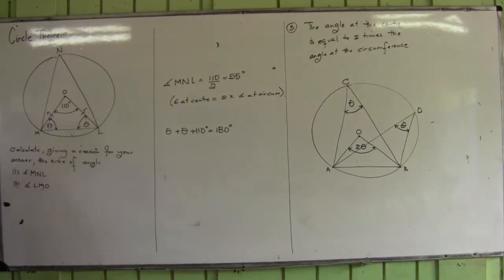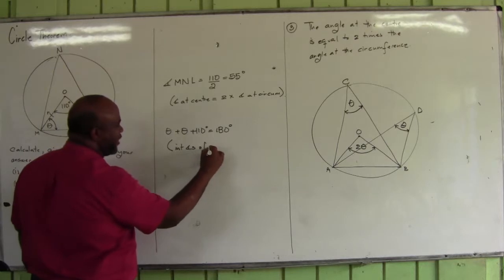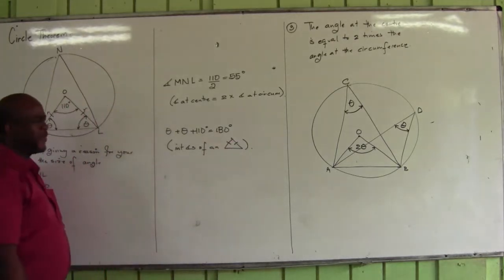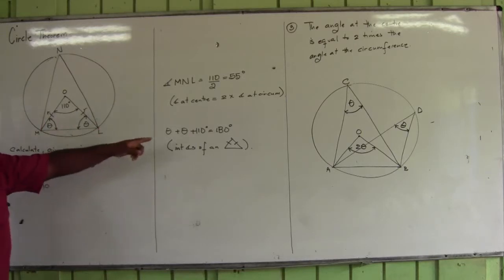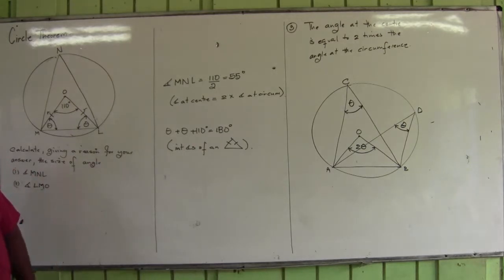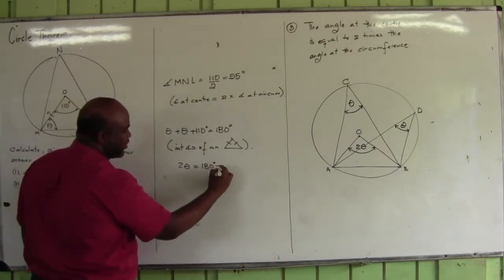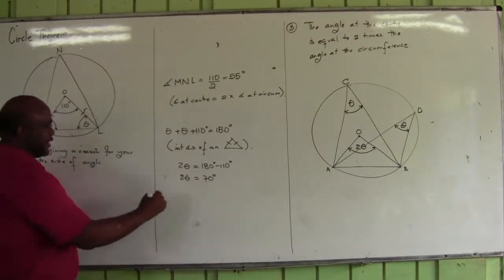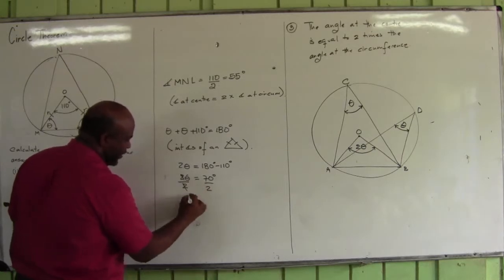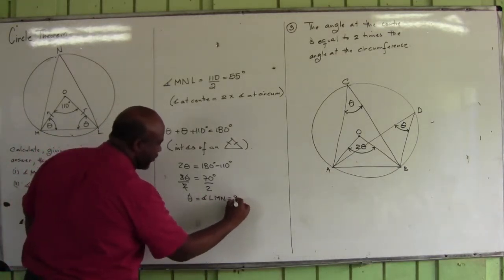Why? Because they are the interior angles of an isosceles triangle. There are three interior angles of an isosceles triangle. Two theta plus 110 equals 180. The 110 goes over and becomes negative, so it's 180 minus 110. Two theta is equal to 70 degrees. Divide both sides by two. Theta, which is angle LMN, is equal to 35 degrees.